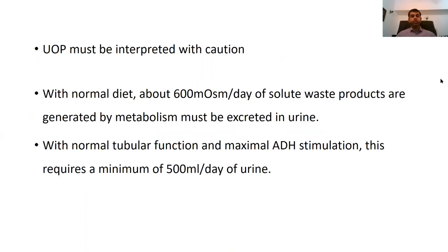We must be very careful when interpreting urine output because there are so many variables attached to it, and you need to have a good idea about what factors govern urine output. Normally, a person on a normal diet generates about 600 milliosmol per day of solute waste products, which needs to be excreted in the urine following metabolism.